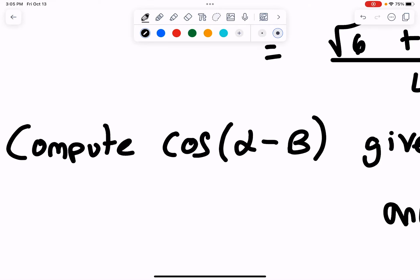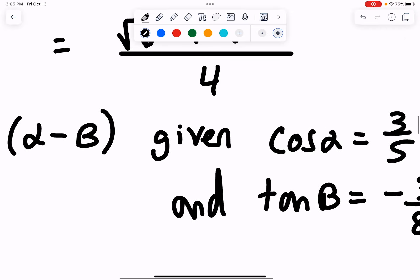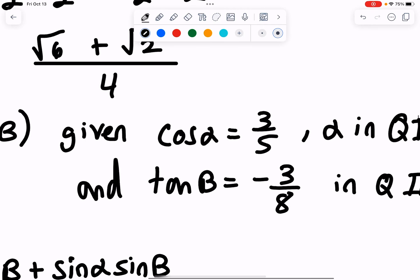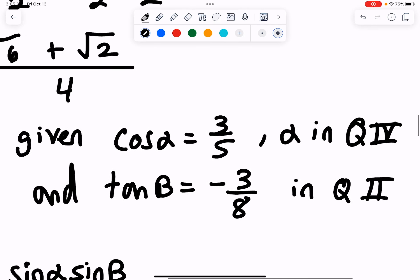In this example, we're asked to compute cosine of alpha minus beta. We're told that cosine of alpha is equal to three-fifths and that alpha is in the fourth quadrant. We're also told that tangent of beta is negative three-eighths and that beta is in the second quadrant.